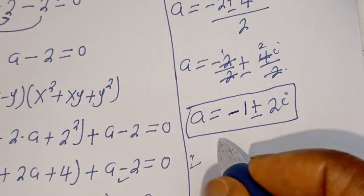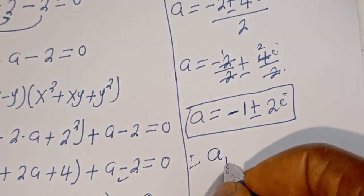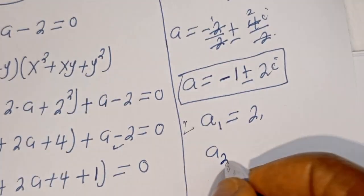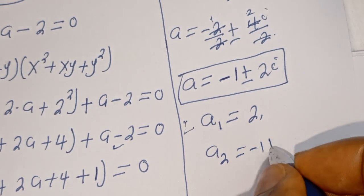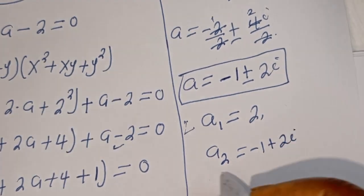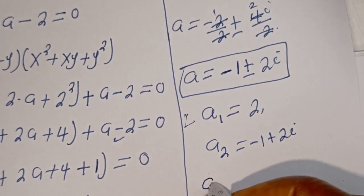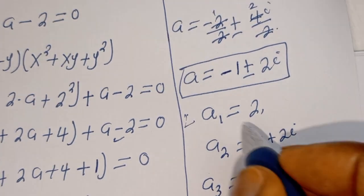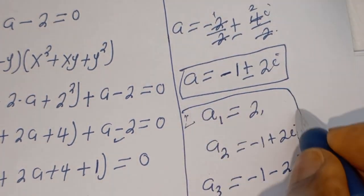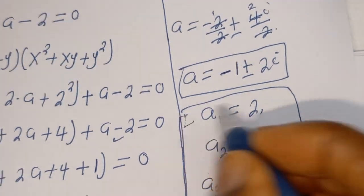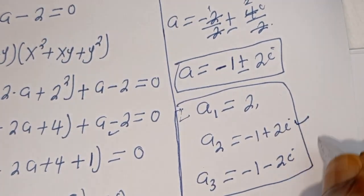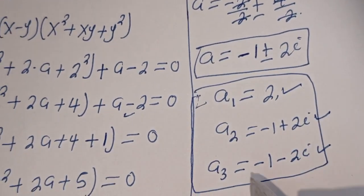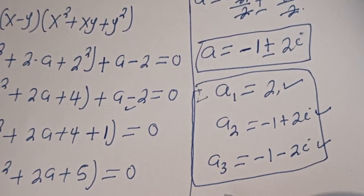Therefore our final answers are: A₁ is equal to 2, A₂ is equal to minus 1 plus 2i, and A₃ is equal to minus 1 minus 2i. These are all the values of A. You can see that we have two complex roots and only one real root.